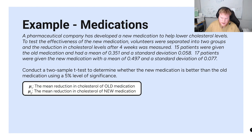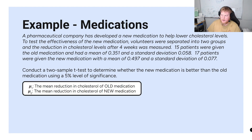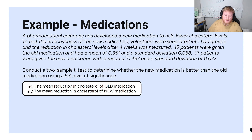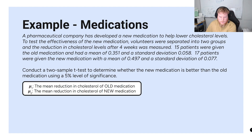S sub one is the standard deviation of that first group and n sub one is the number of samples in that first group. Labeling your mus is definitely helpful to keep track of where everything is supposed to go when you start typing things into your calculator.